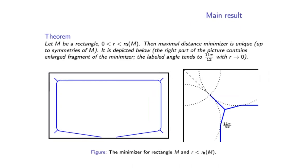Our main result is the following: we find the set of solutions, which we call minimizers, for the rectangle depicted here. You may see that the solution has a very simple form outside the angles of the rectangle, and a more complex form in the angles.